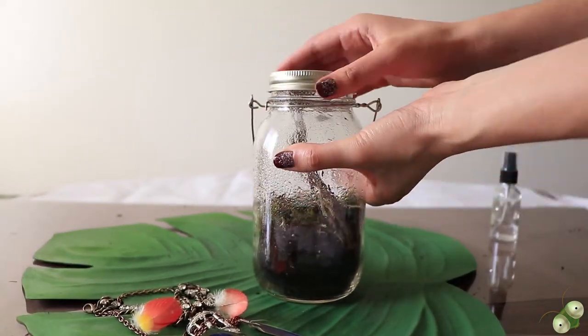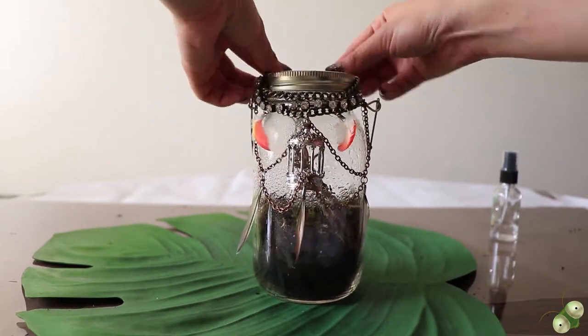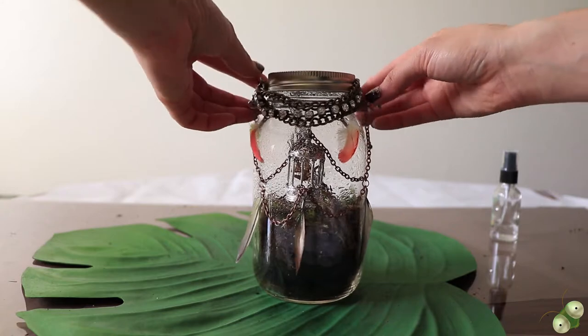And then here's this little jar necklace that I made with feathers from a bird farm. The feathers fell off the birds and I just picked them up and I was able to get them.